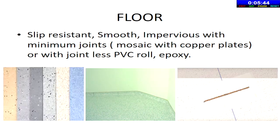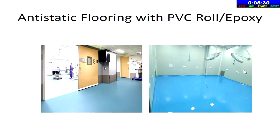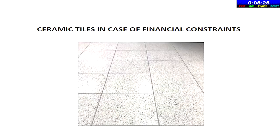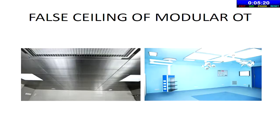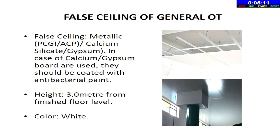Flooring must be smooth, shiny, slip resistant, and impervious with minimum joints. The floor should be inset mosaic with copper plates to carry away static electricity, or made anti-static with PVC roll or epoxy. Stainless steel or EGP panels backed with gypsum or calcium silicate can be used for false ceiling if budget permits; otherwise plain metallic boards or calcium silicate boards can be used, coated with antibacterial paint.